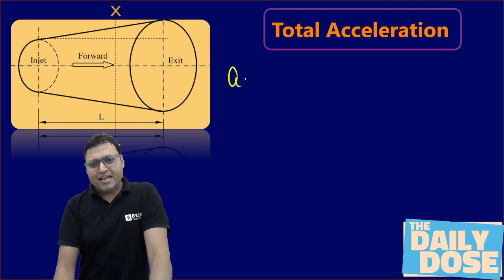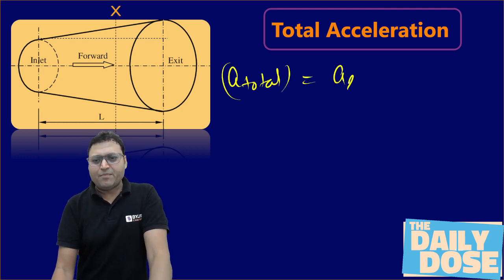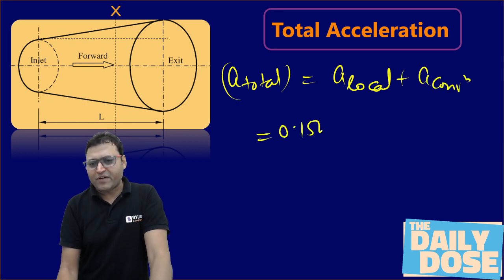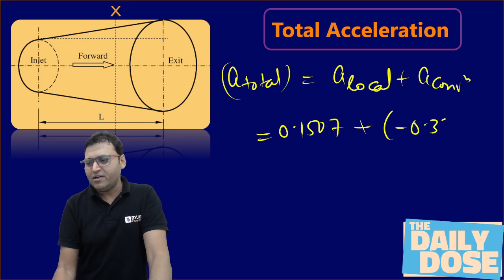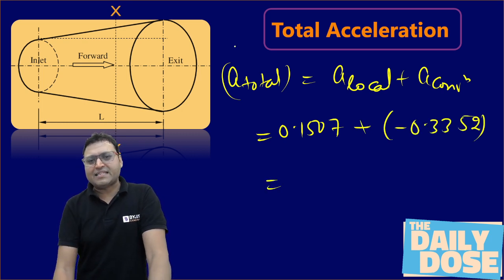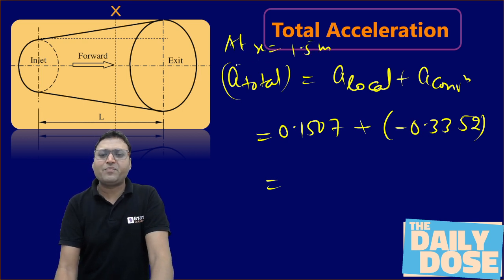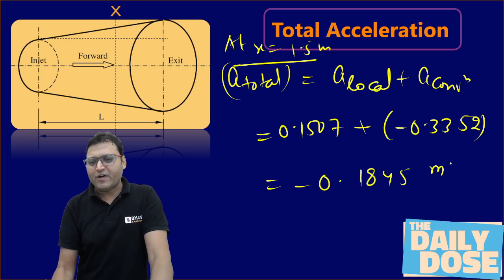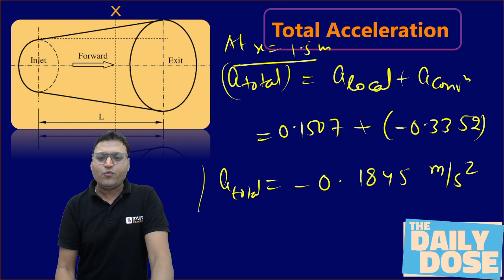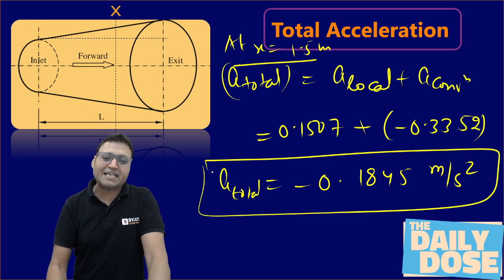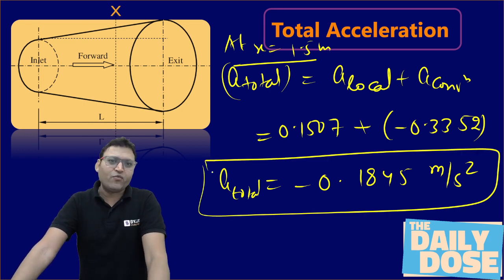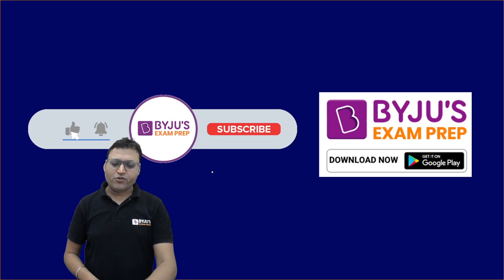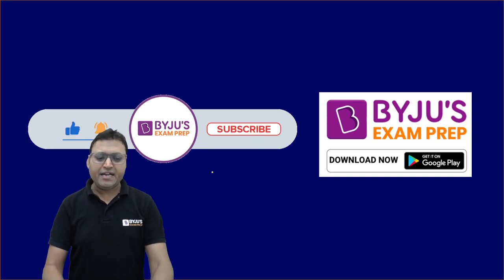The total acceleration of the fluid is the algebraic sum of local and convective acceleration: 0.1507 + (−0.3352) = −0.1845 meters per second squared. That is how we can find out and understand the difference between local and convective acceleration. I hope it is clear to everyone — see you in the next video. Till then enjoy, take care, have a good day and a great future ahead.